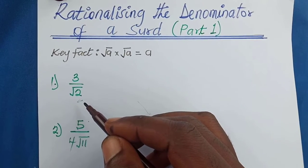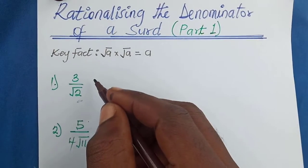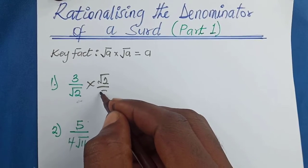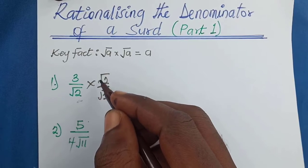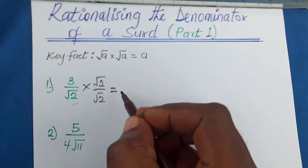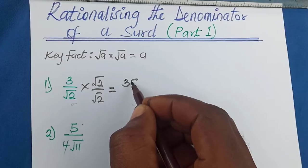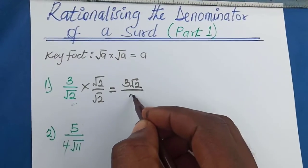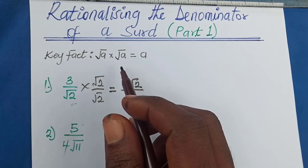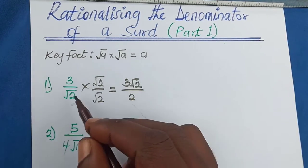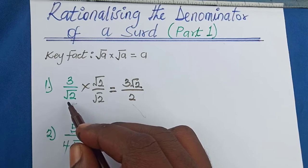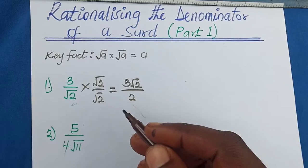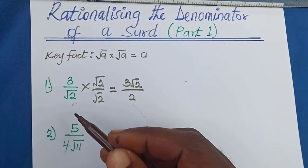The rationalizing factor of root 2 is root 2. So we multiply both the numerator and denominator by root 2 — that is, multiply the fraction by root 2 over root 2. This gives us 3 times root 2 in the numerator, which is 3 root 2, and root 2 times root 2 in the denominator, which is 2. So we get 3 root 2 over 2. We have changed the irrational denominator to a rational number — that is the whole idea of rationalizing the denominator.